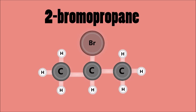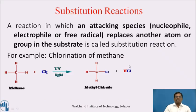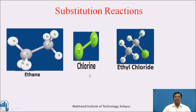Next is substitution reaction. A reaction in which an attacking species — that is a nucleophile, electrophile, or free radical — replaces another atom or group in the substrate is called a substitution reaction. For example, chlorination of methane: when methane reacts with chlorine in the presence of ultraviolet radiation, it gives methyl chloride and hydrochloric acid. This can be explained with this schematic presentation — ethane molecule reacts with chlorine to form ethyl chloride in the presence of ultraviolet radiation.